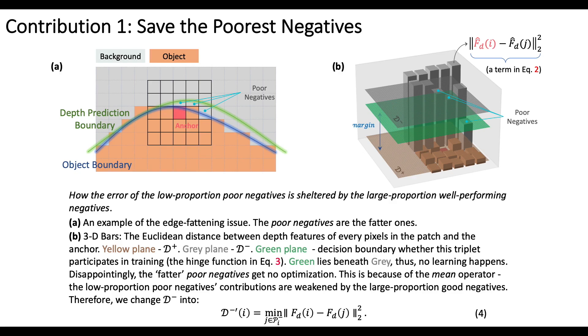Therefore, we only pick the worst negative to optimize.